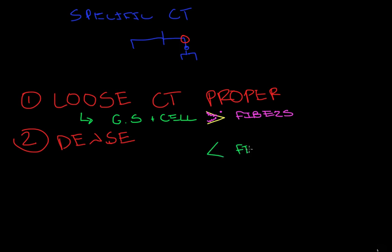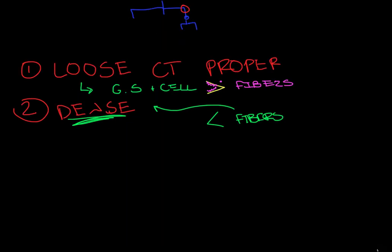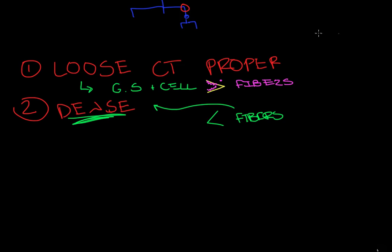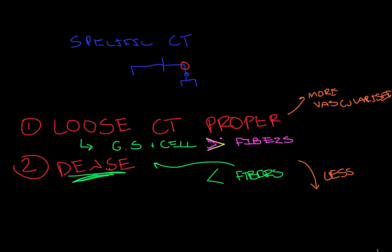So more fibers, and this kind of seems intuitive. Dense, so the fibers are more dense than the loose, hopefully that makes sense. And then there's some characteristics that are derived from this. So the loose, because it's loose, it's more vascularized. More vascularized and dense is going to be less vascularized than the loose. So now we can go into specifics.